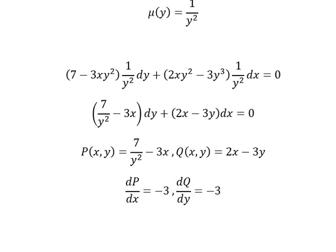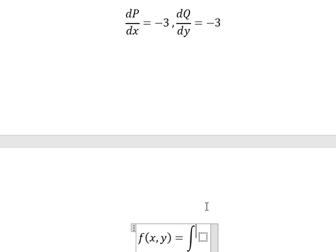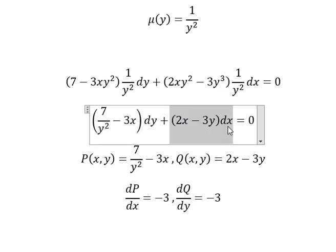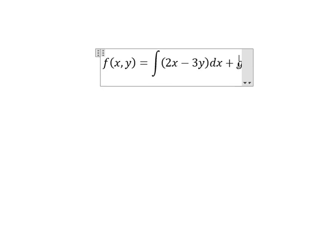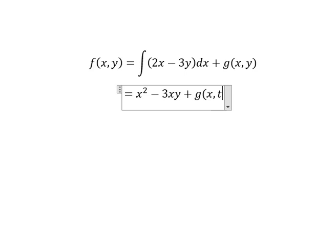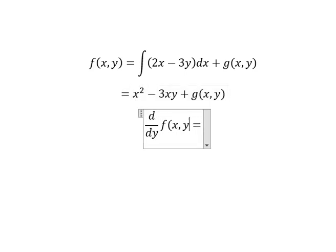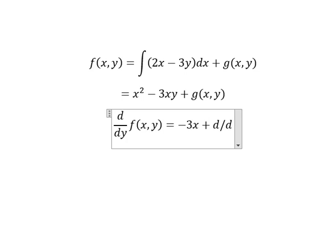Now we can set up the function F(x,y) equal to the integration of P(x,y). I will choose to integrate the x terms. The integration of 2x gives about x squared. The integration of 3y gives about 3y, plus G(y). Next, we need to do the first derivative of F with respect to y. First derivative of x squared, you get about zero. First derivative of negative 3y, you get about negative three plus d/dy of G(y).